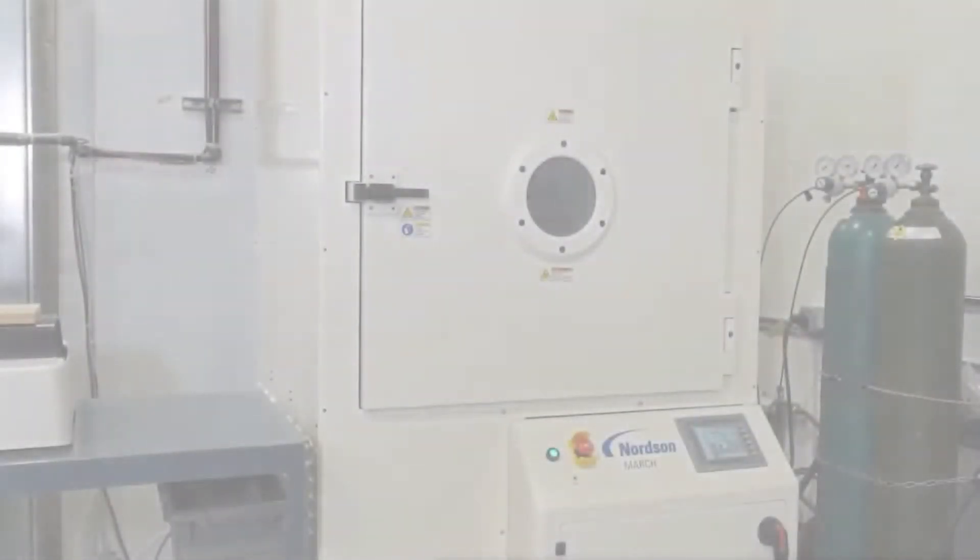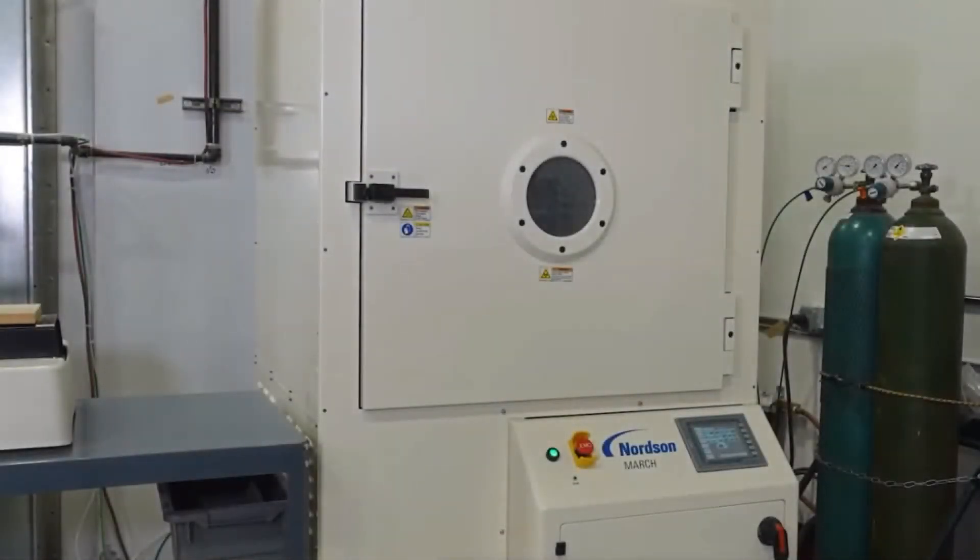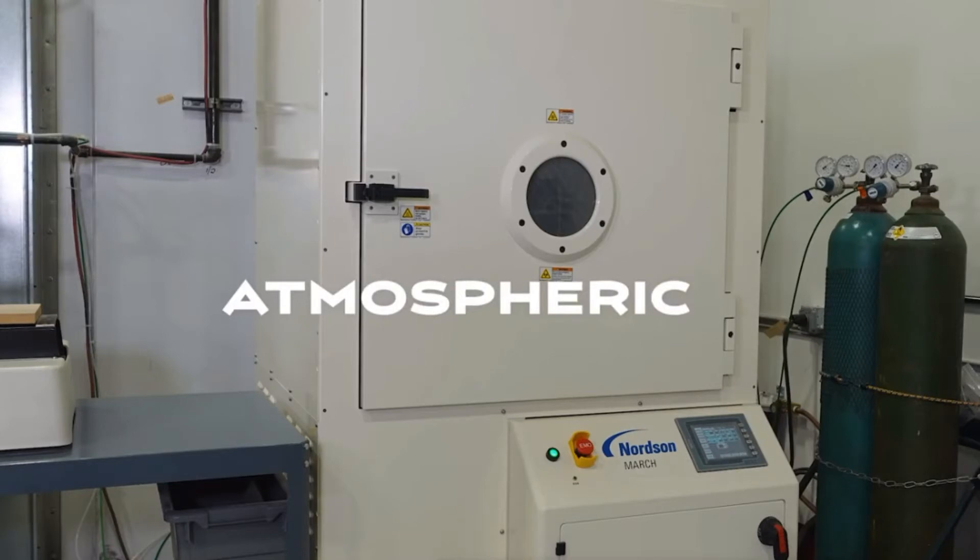Plasma pretreatment replaces liquid electrocoat and phosphate pretreatment and comes in two forms, atmospheric and vacuum. Atmospheric occurs in an open environment and is a line-of-sight process in which only the surface area exposed to the plasma is treated.